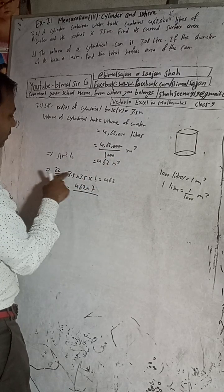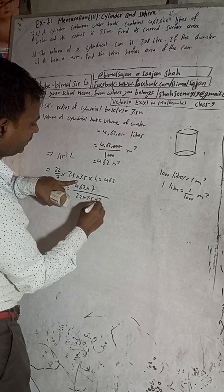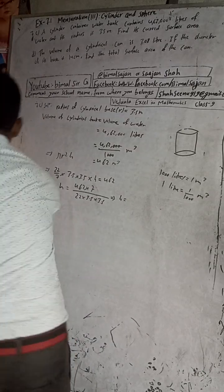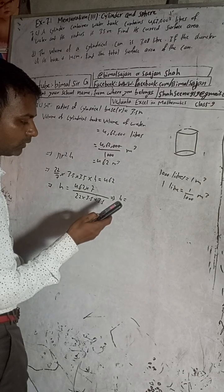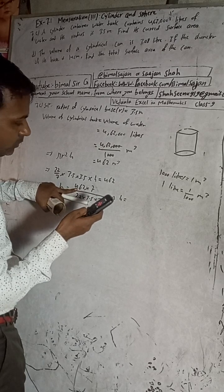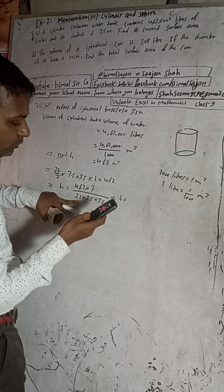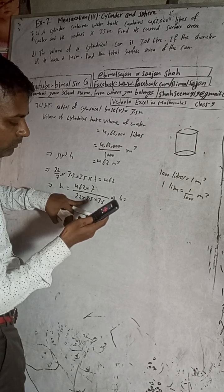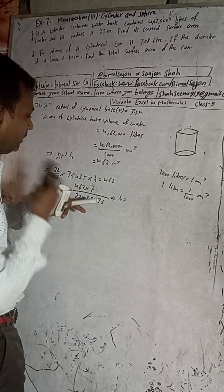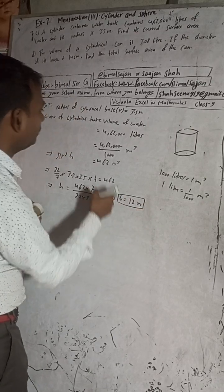Rearranging to solve for h: h = 462 × 7 ÷ 22 ÷ 3.5 ÷ 3.5. Calculating this gives h = 12. So the height of the cylinder is 12 meters. Now we know r = 3.5 m and h = 12 m, so we can find the curved surface area.